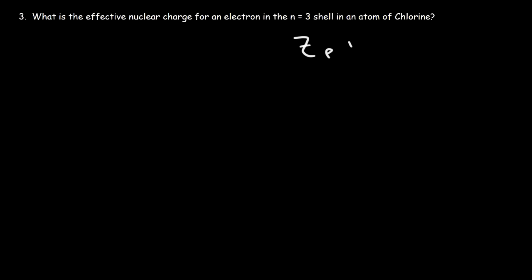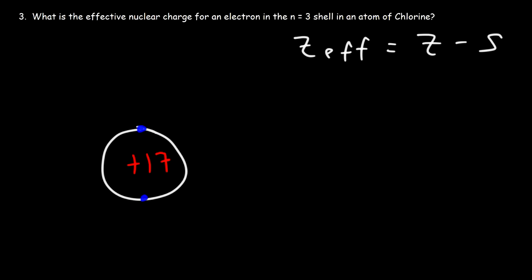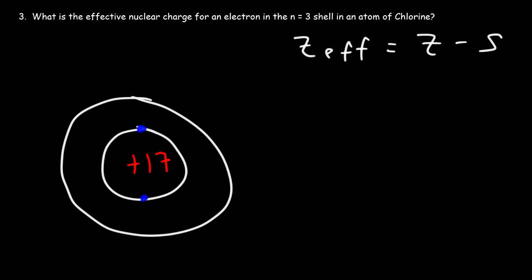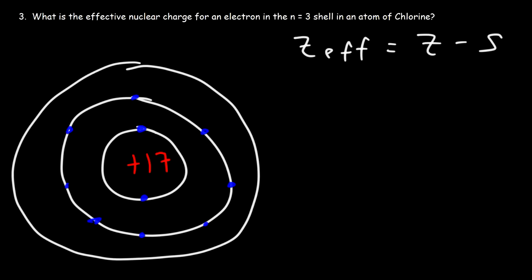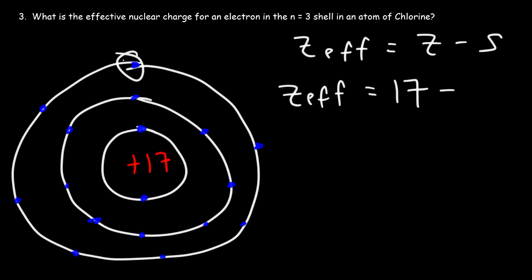Let's begin with the formula. Chlorine has an atomic number of 17, so there are 17 protons in its nucleus. The first shell has 2 electrons and the second shell, just like aluminum, has 8 electrons. The third shell, the last shell, has the remaining 7 electrons — those are the 7 valence electrons in chlorine. So for an n equal 3 electron: 17 minus 10 inner shell electrons (2 in the first, 8 in the second) gives an effective nuclear charge of plus 7.